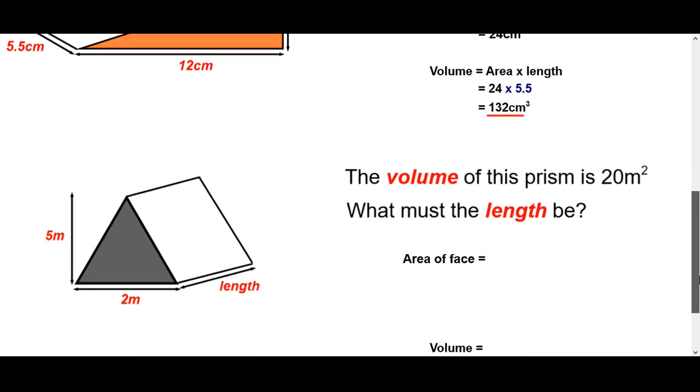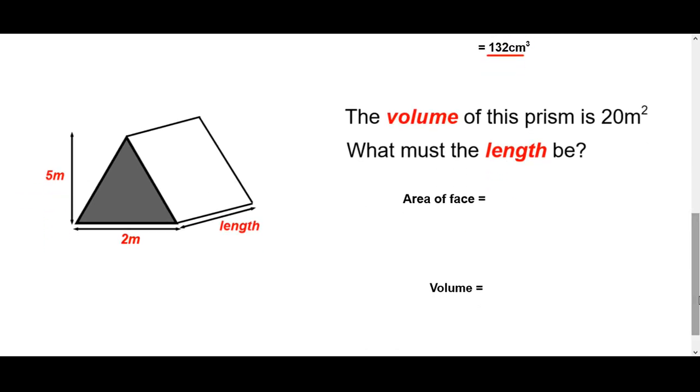Finally a wee tricky one to do. Just that we can almost look like a reverse problem. So we've been told the volume of the prism is 20 metres squared. And we've got to work out the length.